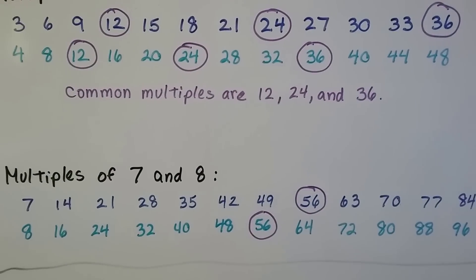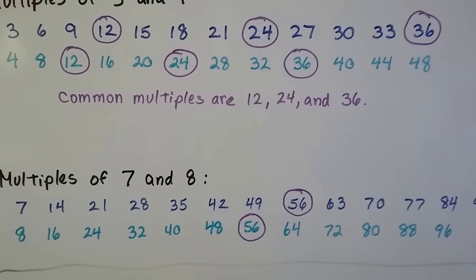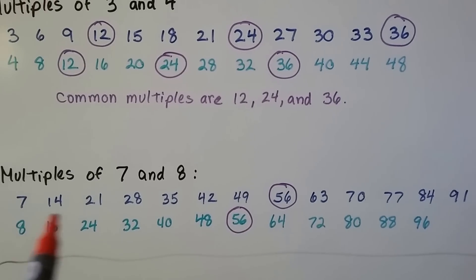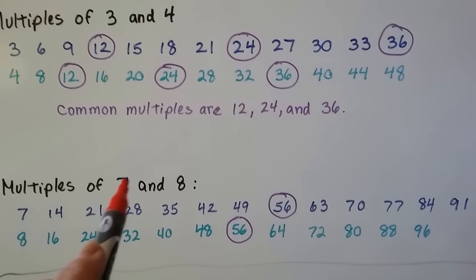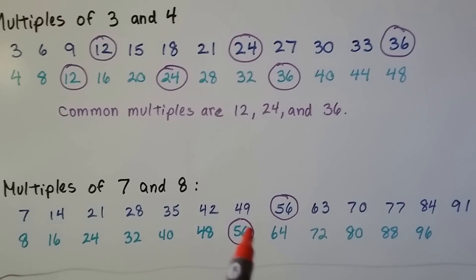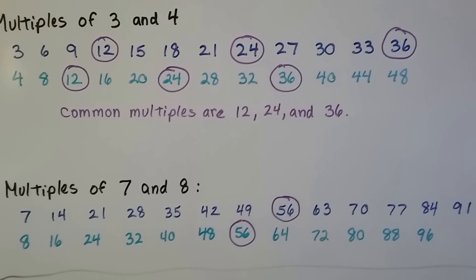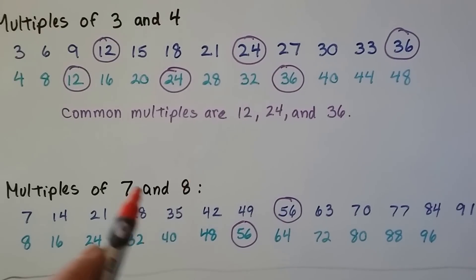Look at the common multiples for 7 and 8. Look at this. There's nothing, and then all of a sudden it's 56. And you want to know something? That's what 7 times 8 is. It's 56. Sometimes we can find a common multiple by multiplying the two numbers together.